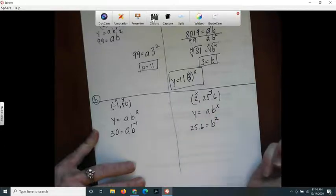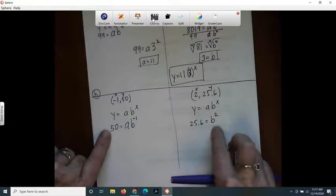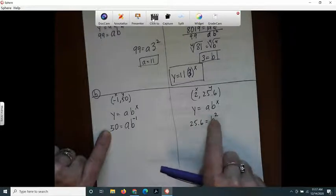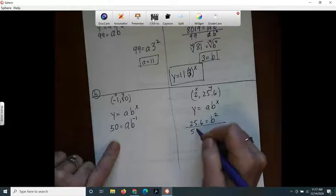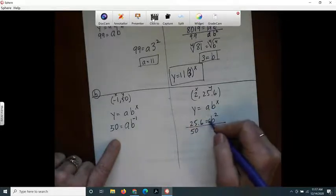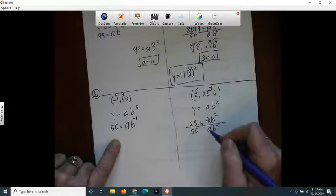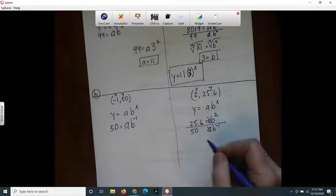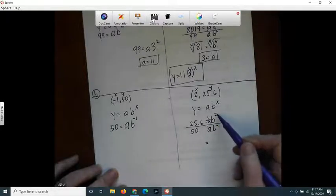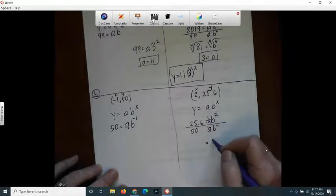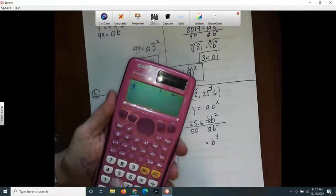And 25.6 equals a times b squared. I'll still use my same method. I have these two equations, and I want to do a system of equations. So I'm just going to divide this equation by this equation. You can do it the other way around. It would be fine. You don't have to do it this way. There's other ways that it can be done. But this, I think, is going to be the most simple way to do it. So this thing is just going to be some kind of decimal. But here I've got b squared divided by b to the negative 1. And you subtract the exponent. So it's 2 minus negative 1. So that's going to be b cubed. b cubed is going to end up being 25.6 divided by 50.